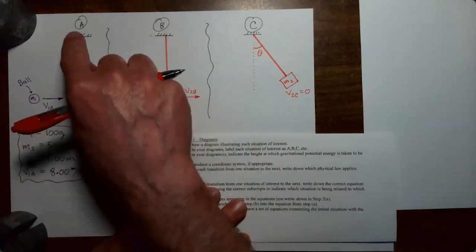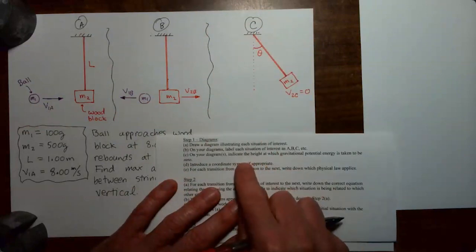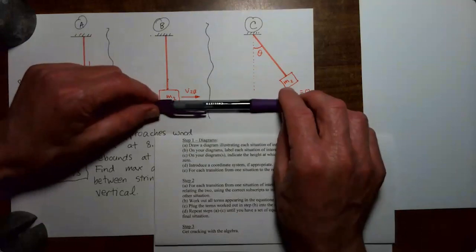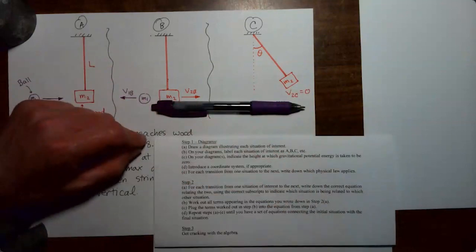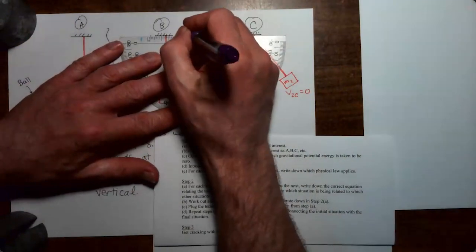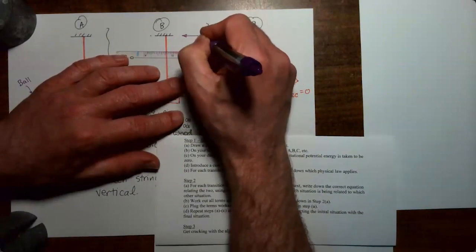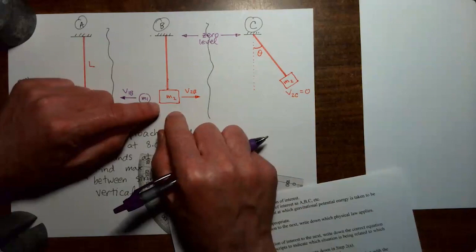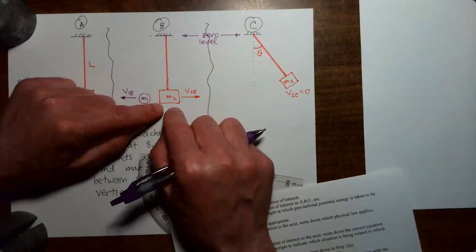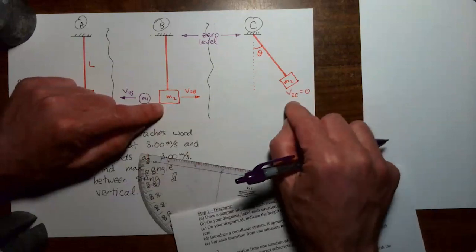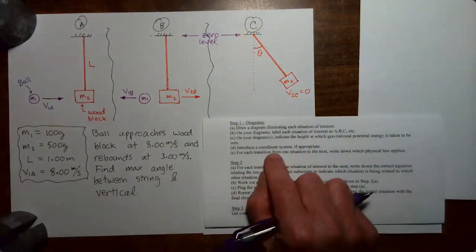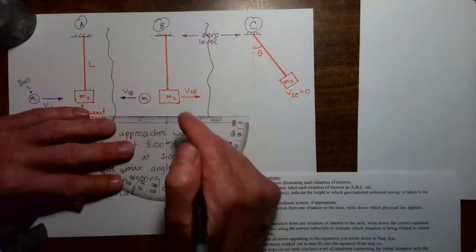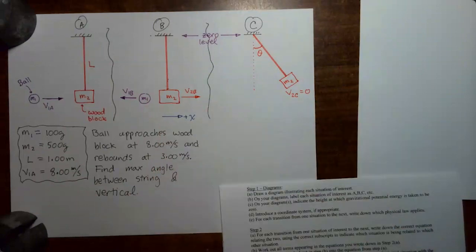Coming back to the handout, we have labeled the situations A, B, and C. We want to indicate the zero level for gravitational potential energy. My preference is to put the zero level at the support point for the string. This means that the gravitational potential energy for mass 2 will always be negative — more negative in situation B, and less negative in situation C. For the coordinate system, we say the plus X direction points to the right.